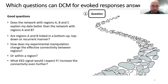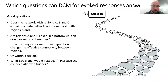A second question could be: are regions A and B linked in a bottom-up, top-down, or recurrent manner? You could also ask how an experimental manipulation — for example administering a substance or directing attention — changes connectivity between or within regions. Another question you could answer is: what EEG signal would I expect if I increase the connectivity further? This is a simulation question — you can simulate from the DCM and perform virtual lesion experiments to understand your model parameters.